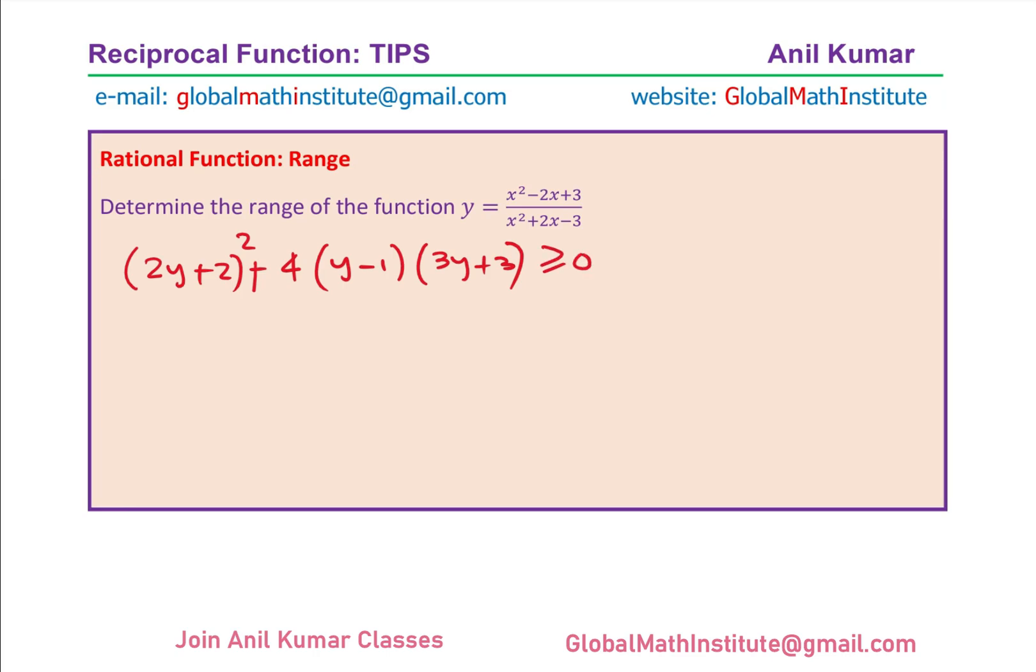Make sense? So that is what we need to simplify and then find the answer. So some work required to be done here. Let us expand and simplify this. Whole square means 4y square. Plus 2ab means 8y plus 4. Multiplying with 4, we have 4y minus 4 times 3y plus 3, greater than or equal to 0.